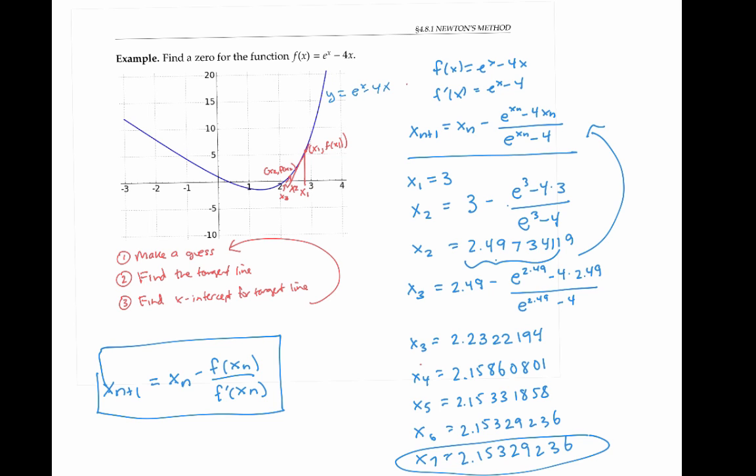I found one zero for my function. And if I wanted to find the second zero, the one over here, I would just need to start with an initial value that's close to this x-coordinate, perhaps an initial value of zero might be good.